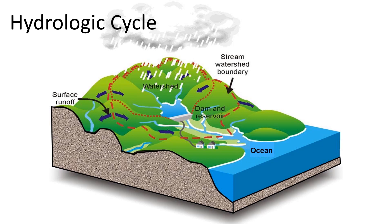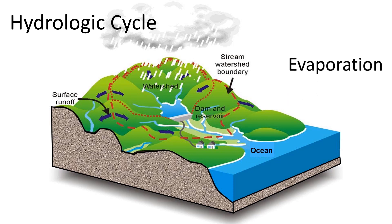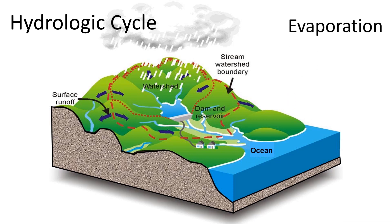We'll start the cycle with the concept of evaporation. Water that is stored in large bodies of surface water will evaporate and enter the atmosphere. For our purpose here, the ocean will be our main source of water vapor.